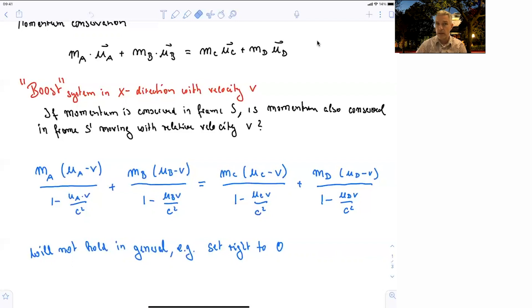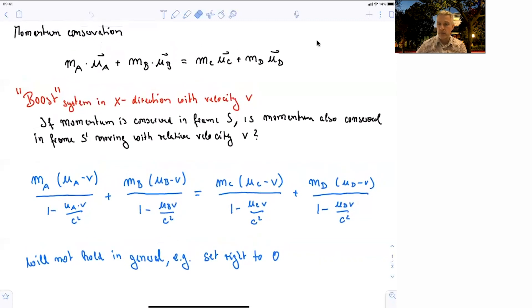But in the last section, we introduced the new concept of proper velocity. So how about redefining momentum through proper velocity, and just saying ma times proper velocity a plus mb times proper velocity b is equal to mc times proper velocity c, and so on, and see whether or not we can learn something from this equation.